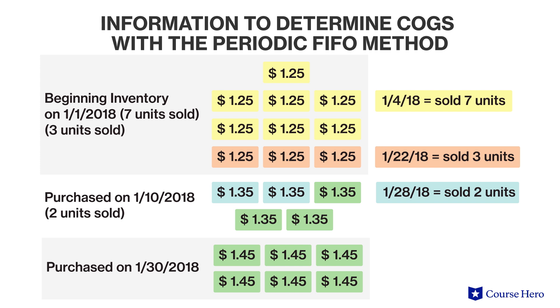With the FIFO inventory valuation system, the oldest units will be deemed to be sold first. Assume that company ABC is using a perpetual inventory system and a FIFO inventory valuation method. Its beginning inventory includes 10 units, and goods are purchased and sold throughout January. For the first sale of seven units on January 4th, all seven units will come from the 10 items available in beginning inventory at $1.25 per unit. The five units purchased on January 10th and six units purchased on January 30th would not be relevant for the January 4th sale because those purchases had not yet occurred.